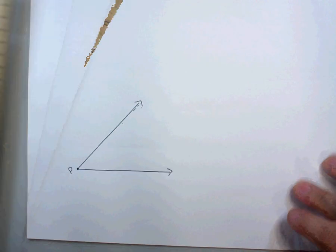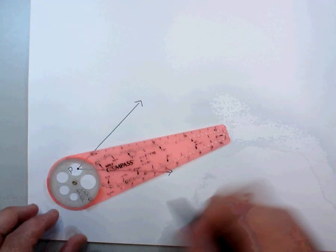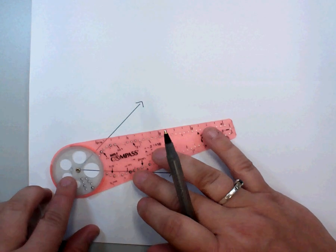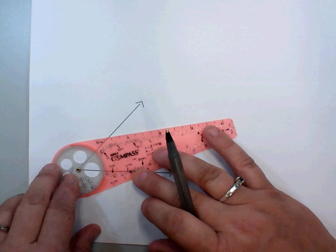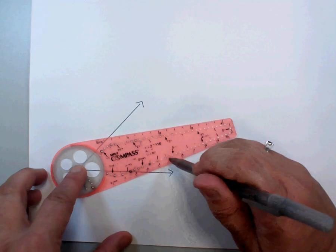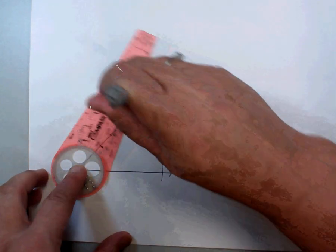So then we're going to put the metal hole, the little brass ring of our compass, on point P. And we're going to draw a large arc that intersects both sides of P.